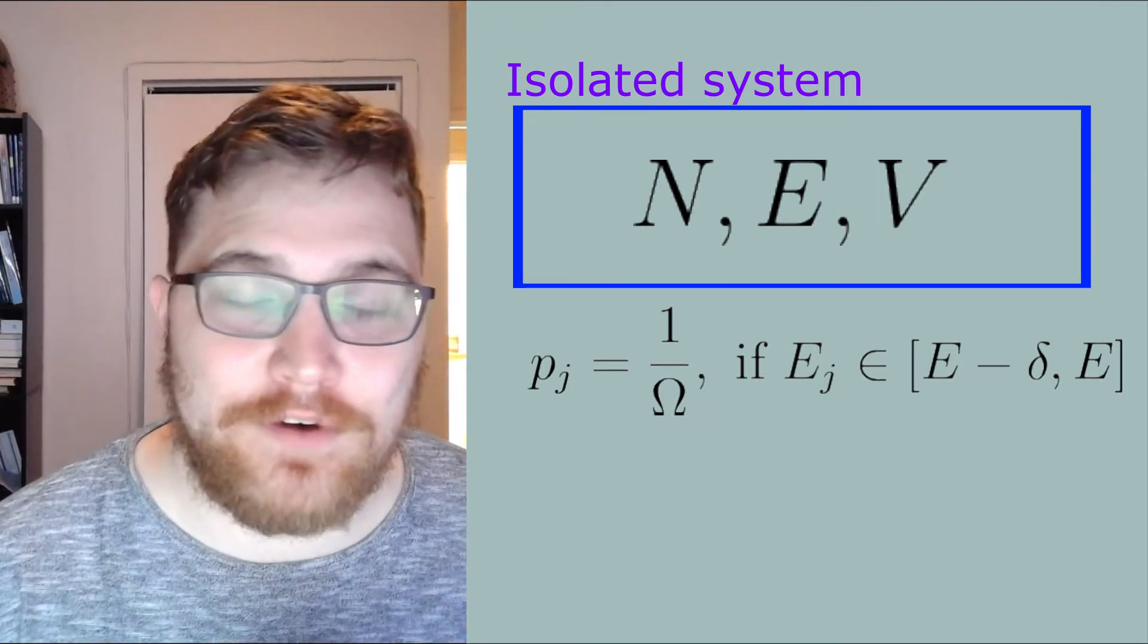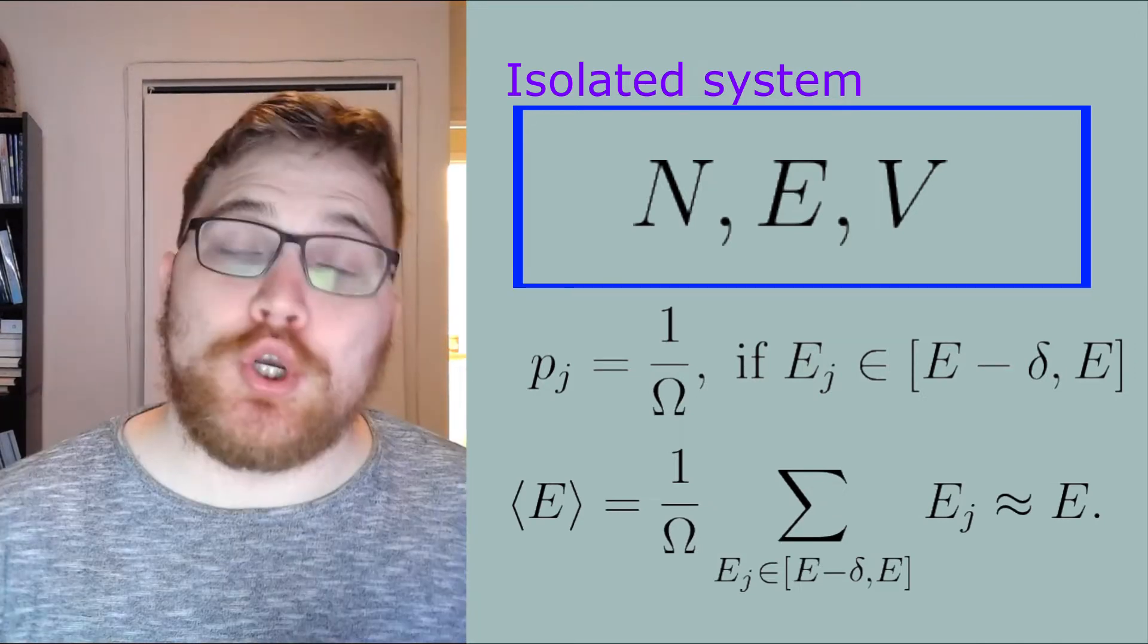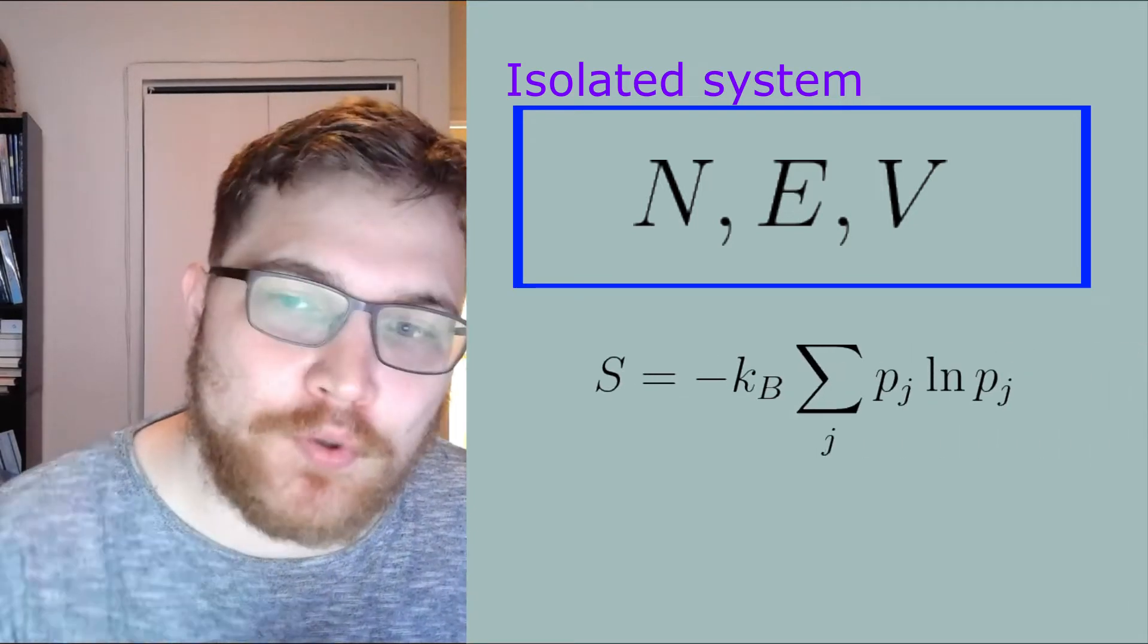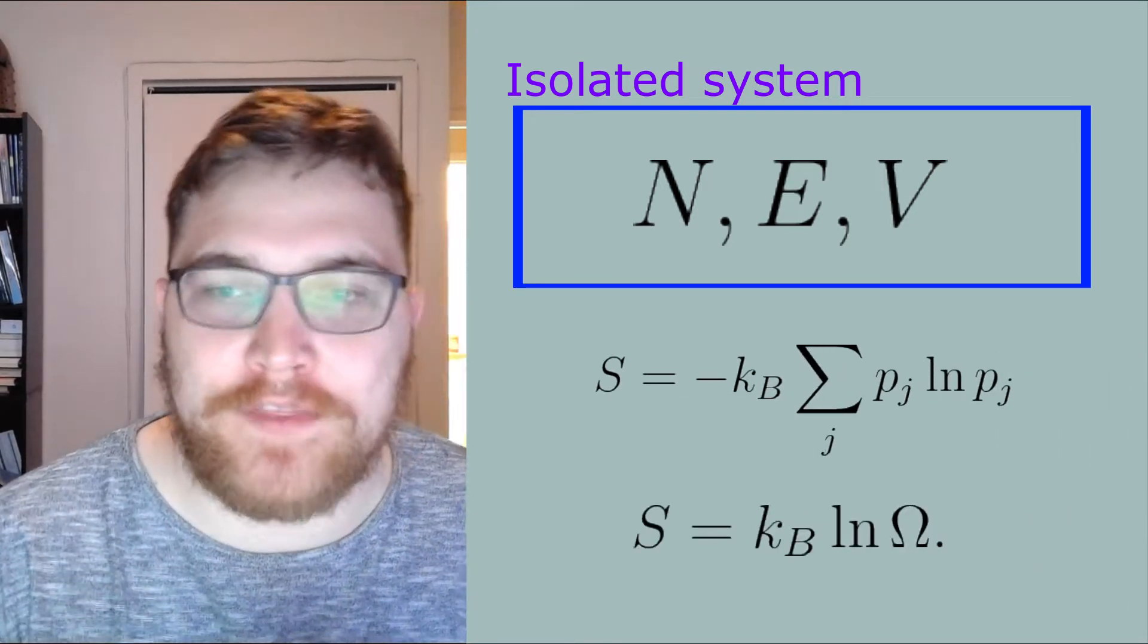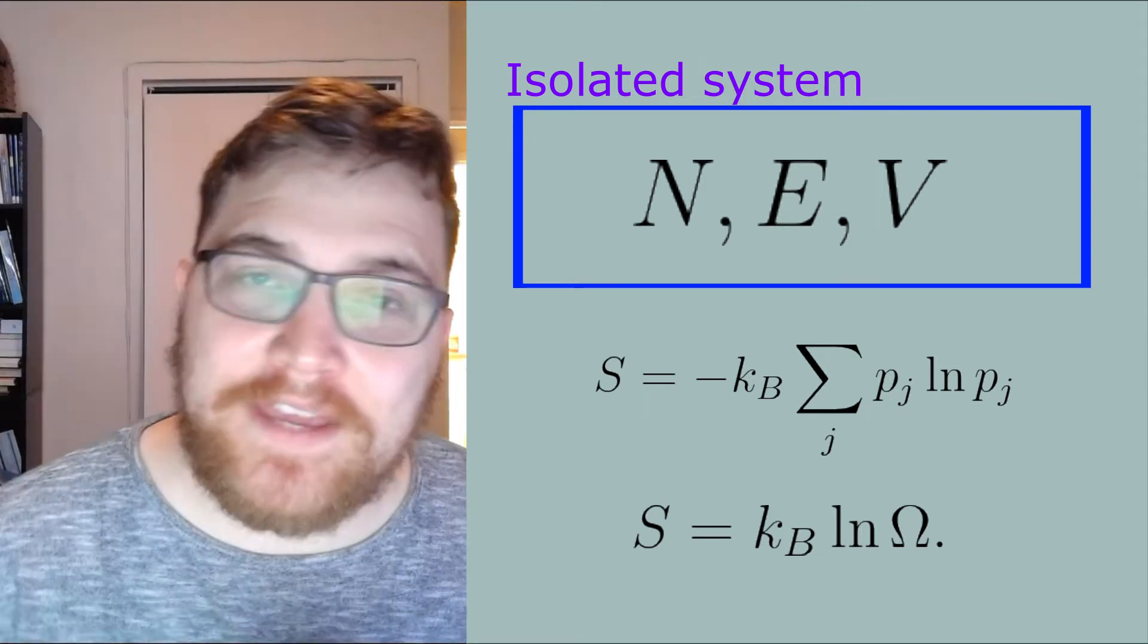Using the Gibbs entropy formula as seen here, we see that we get the Boltzmann entropy back for the entropy of our microcanonical ensemble.